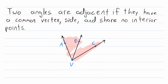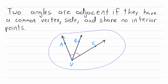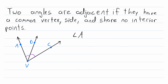What are two adjacent angles in this diagram? Notice that angle AVB and angle CVB have a common vertex of V. Additionally, angle AVB and angle CVB have a common side of VB. And then lastly, do these two angles share any interior points? No, they do not. Angle AVB's interior points are all over here, and angle CVB's interior points are all over here, so they do not share any interior points.